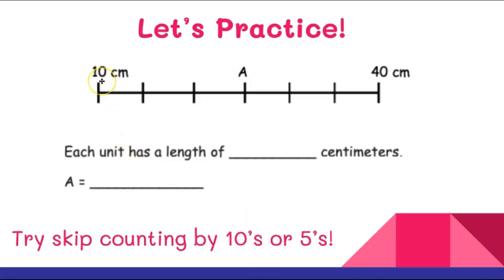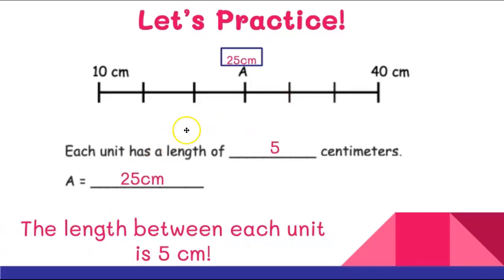Let's try tens first: counting 10, 20, 30, 40, 50, 60, 70 — I got to 70 but this says 40, so tens is not the value of each unit. Let's try fives, starting at 10: 10, 15, 20, 25, 30, 35, 40. That's correct! So the value of each unit is 5. Now I'll count back up by fives to fill in the number line: 10, 15, 20, 25. A equals 25 centimeters, and each unit has a length of 5.